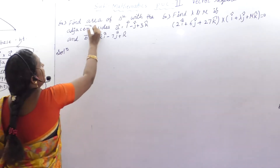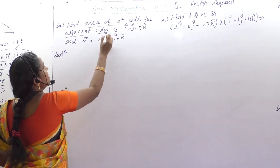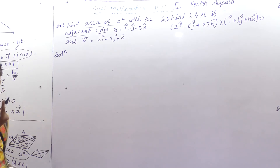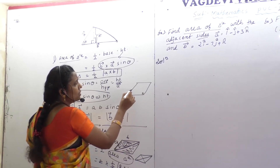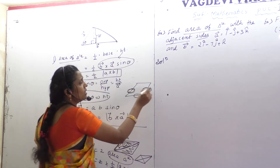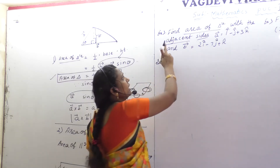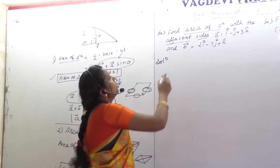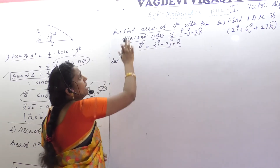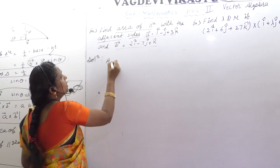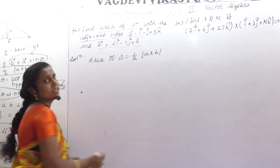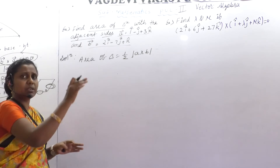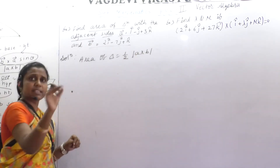Check the question: find area of triangle with the adjacent sides — this is very important, adjacent sides must be there. A and B are given. Area of triangle is asked. As we just came to know, area of triangle is given by half into the modulus of the cross product. Because area will not be with respect to direction, we use the modulus expression. You can write A cross B or B cross A — it is left to you.